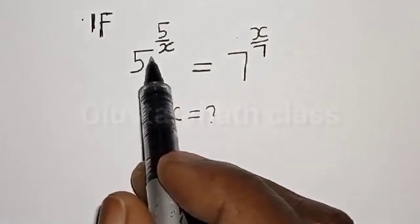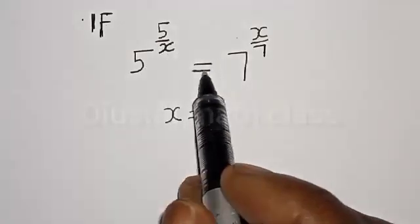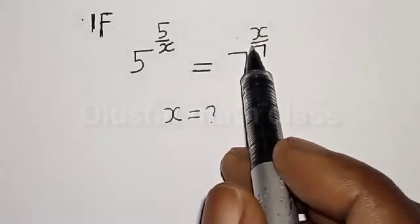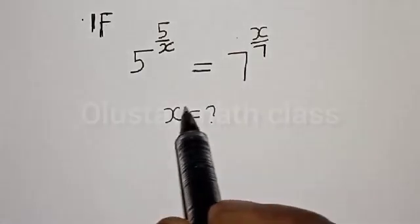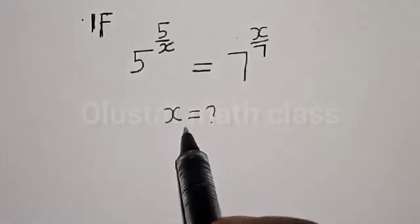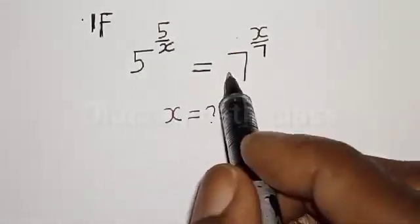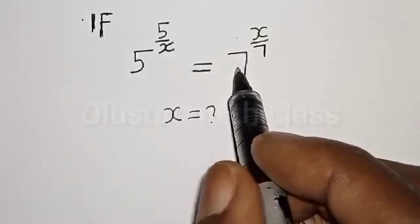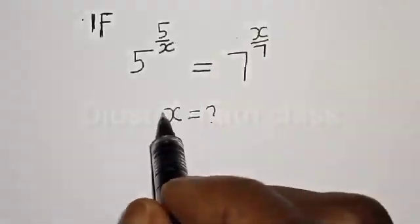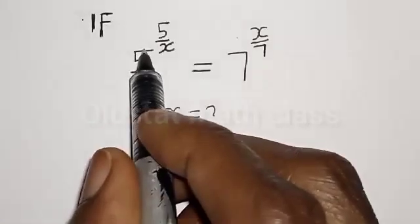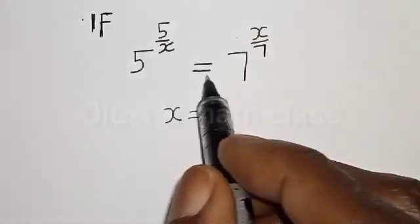If 5 raised to power 5 divided by x is equal to 7 raised to power x divided by 7, what is the value of x? Hi everyone, welcome to my class. In today's class we quickly want to find the value of x from this given exponential equation.